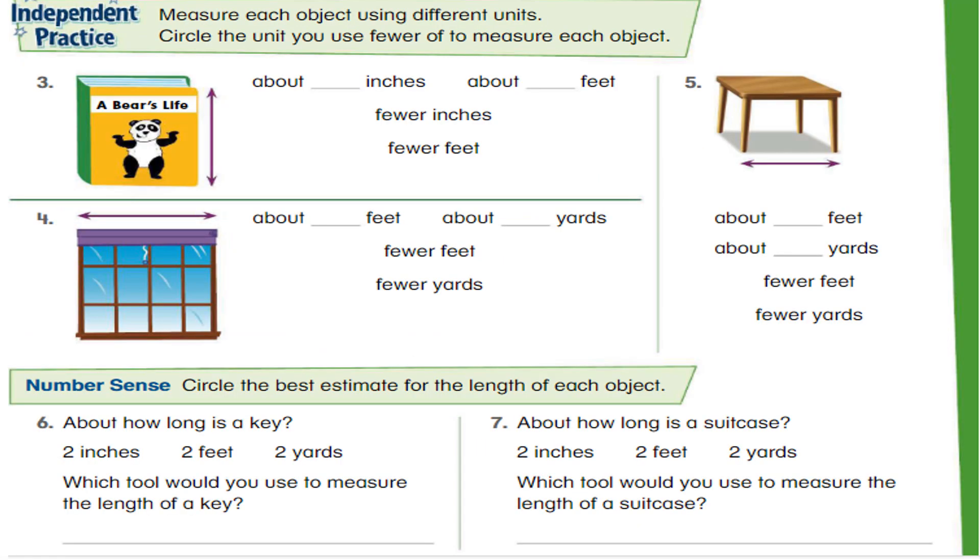On the next page, I have to measure this small board book. This is about a bear's life. So I have to measure using inches and feet. So when I measured it using my ruler, I found out that this book was about 12 inches long and about 1 foot long. So now it's about fewer units, not more. So make sure before making the circle, you have to choose the more or the fewer.